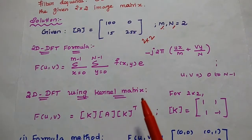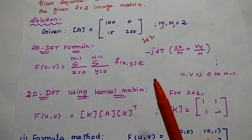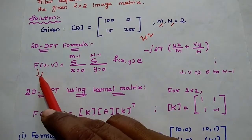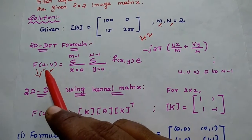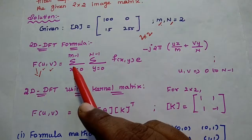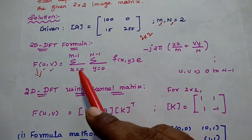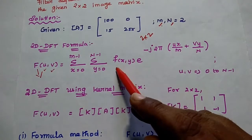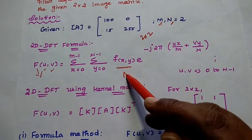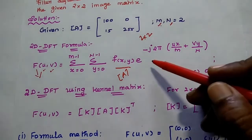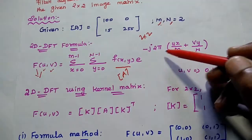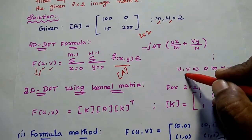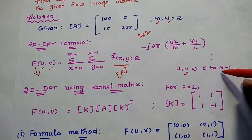Next we are going to use the 2D DFT formula. Capital F of U, V represents the frequency domain signal. U and V represent the frequency coefficients. That is equal to summation x from 0 to M minus 1, y from 0 to N minus 1 of f(x, y), multiplied by e to the power minus j2π into (ux/M + vy/N). Here U and V both can be varied from 0 to N minus 1.